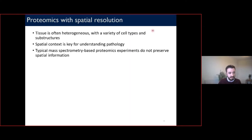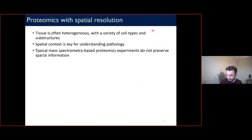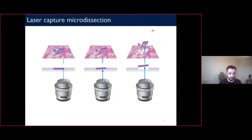Mass spec-based proteomics provides powerful information on biological function, but the typical approach of lysing and homogenizing tissues and cells does not preserve spatial information. There are two ways of thinking about the term spatial: one looks at subcellular resolution and different organelles, but what I'm going to be talking about is distribution within tissue.